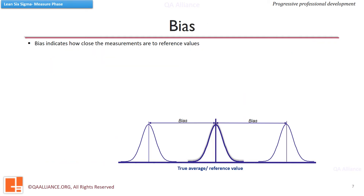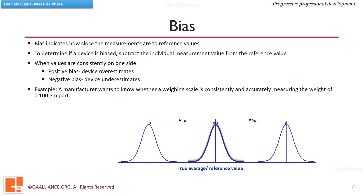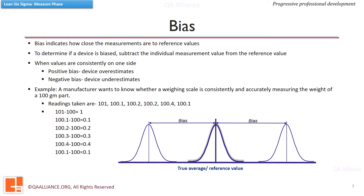Bias indicates how close the measurements are to reference values. To determine if a device is biased, subtract the individual measurement value from the reference value. If the values are consistently on one side, the device may be positively or negatively biased. In positive bias, the device overestimates; in negative bias, the device underestimates. For example, a manufacturer wants to know whether a weighing scale is consistently and accurately measuring the weight of a 100g part. If we subtract the reference value of 100 from the individual measurements, we can say that the scale is positively biased, as the differences are on the positive side.